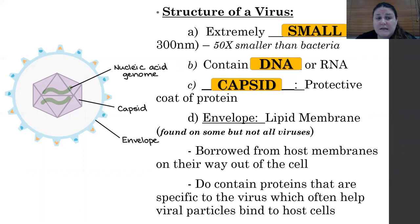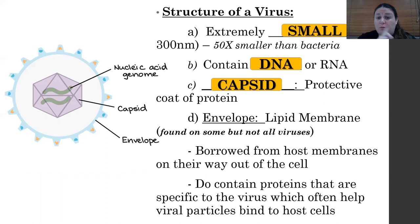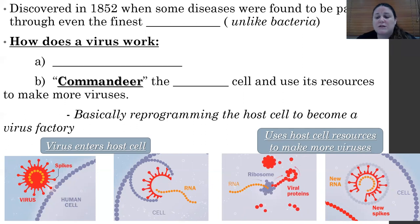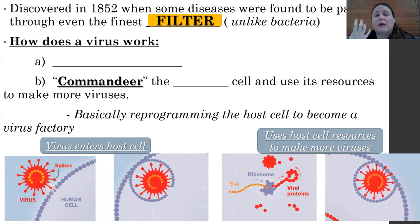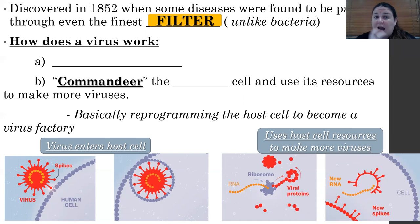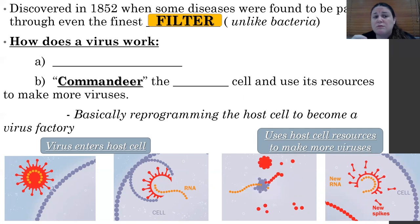Some viruses are, in addition to that, going to have an envelope made out of a lipid membrane — found on some viruses but not all. Where they're getting that lipid membrane from is the host cells — they're kind of stealing some of their cell membrane. A lot of times if they have this envelope, they'll have proteins on the outside that help the viral particles bind to host cells. Viruses were discovered in 1852 when some diseases were found to pass through even the finest filters. That's why doctors and nurses wear N95s or N99s — we need a filter that can filter out very, very small particles.